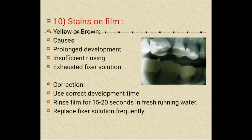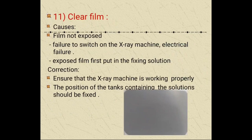Stains on the film appear as yellow or brown stains, caused by prolonged development, insufficient rinsing, or exhausted fixer solution. Correct by using the correct development time, rinsing the film for 15 to 20 seconds in fresh running water, and replacing the fixer solution frequently. A clear film — where nothing appears — means the film was not exposed, due to failure to switch on the x-ray machine, electrical failure, or the exposed film being put in the fixing solution before the developing solution. Ensure the x-ray machine is working and the tanks are positioned correctly: developer first, then washer, then fixer.